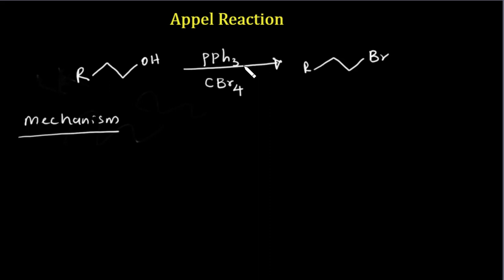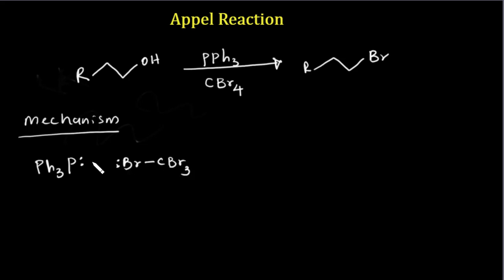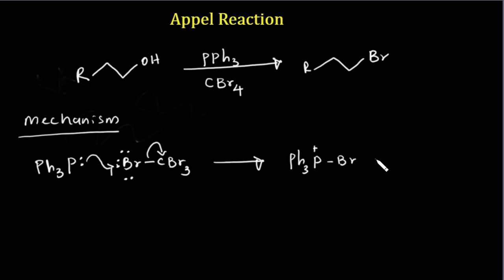First of all, triphenylphosphine reacts with this halide — carbon tetrabromide, CBr4. We have a lone pair here, and this lone pair attacks this bromine, breaking this bond. Then we have this intermediate: a positively charged triphenylphosphine-bromine species and CBr3 minus.